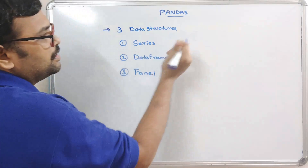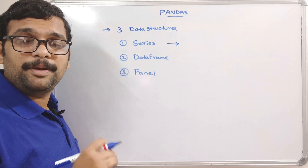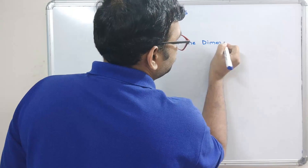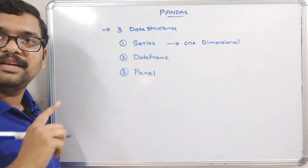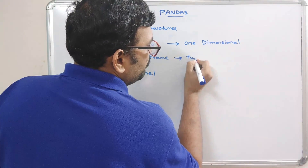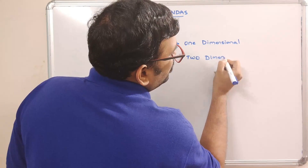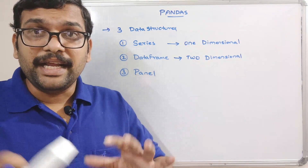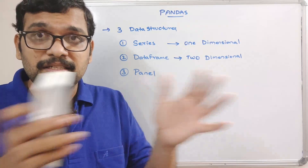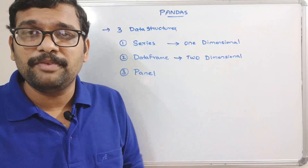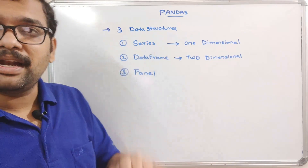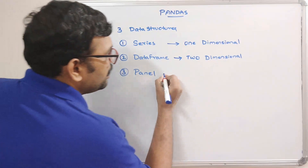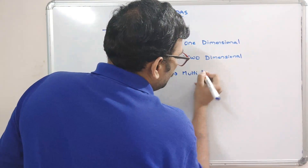In the Series data structure, data is represented in a one-dimensional array. In the DataFrame, data is represented in two dimensions. In both cases, data is displayed in a tabular format with an index. The Panel is used for multi-dimensional data.